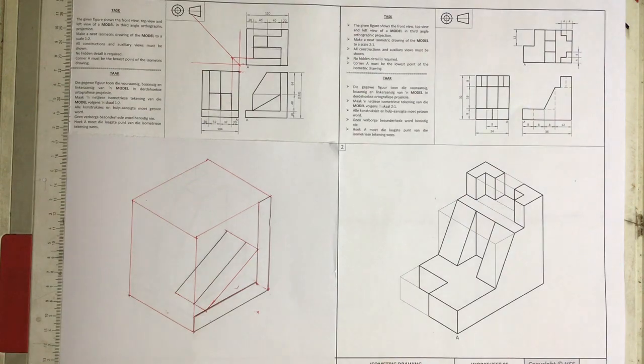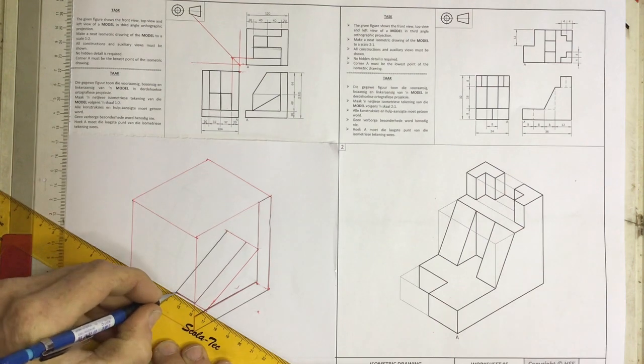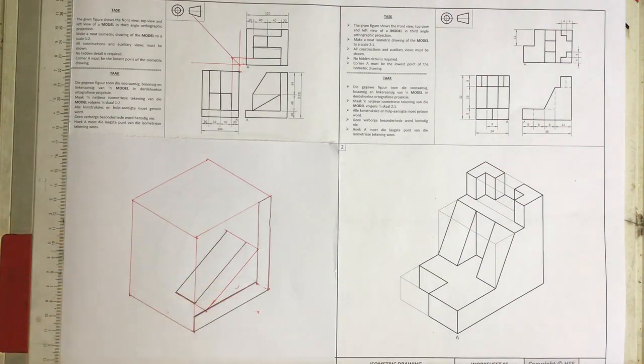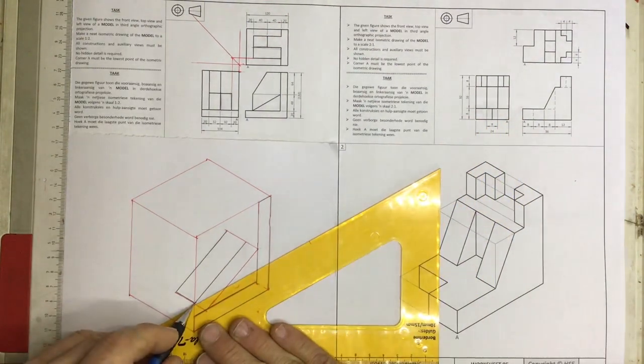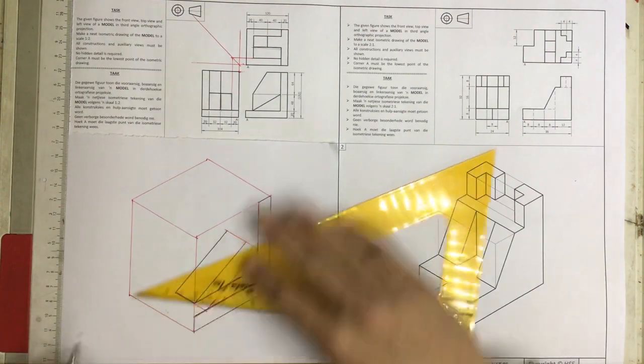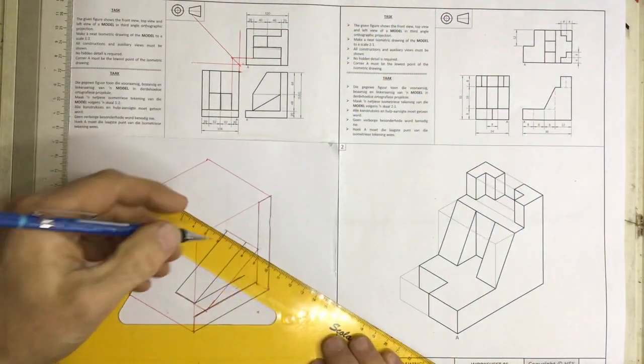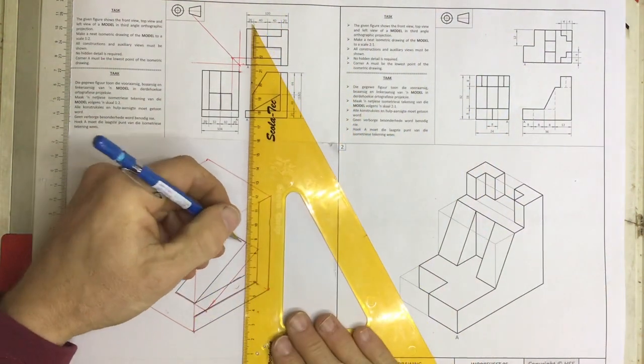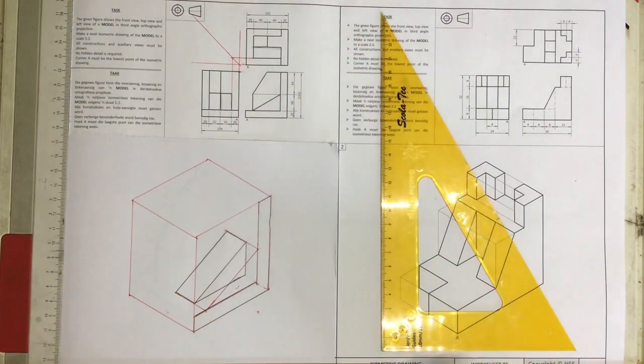Once I've got that, I can draw a line over there. I've got two lines going into this corner, which means I need a third line going back. Two lines going into that corner means I need a third line going down.